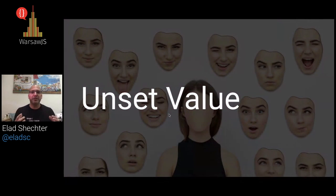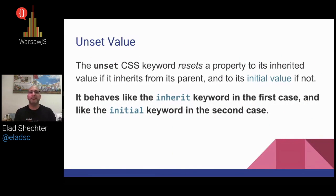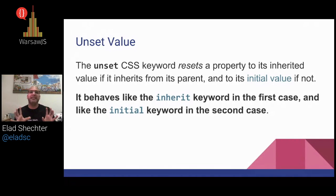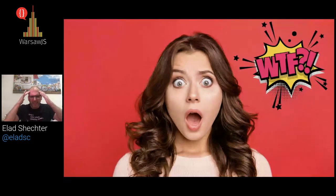The third value is the unset value, and here things are getting a lot more complicated. The unset value sometimes behaves like the inherit value, and sometimes it acts like the initial value. How can you know if it acts like inherit or initial? In properties that have inherit by default, it acts like inherit. In properties that don't have inherit by default, it acts like the initial value. What does that mean exactly?